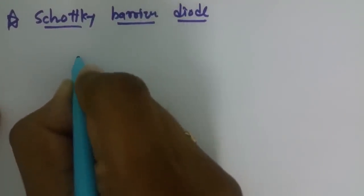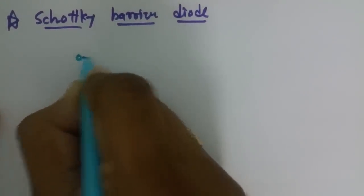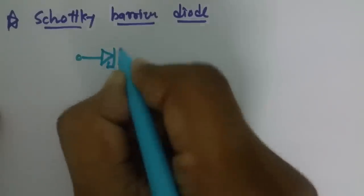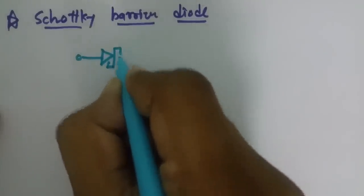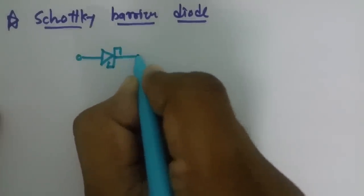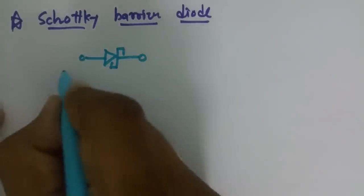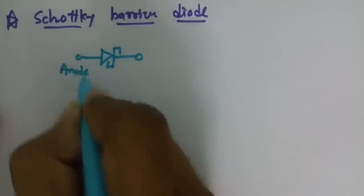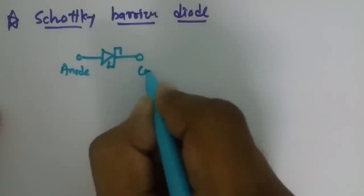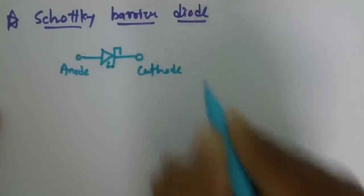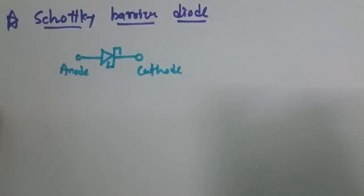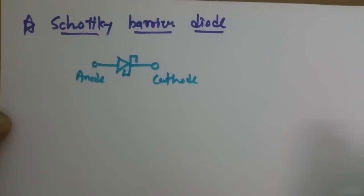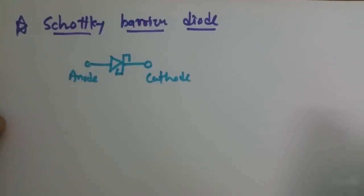Schottky Barrier Diode is a two-terminal device, and its symbol has an anode and a cathode. This is the basic symbol of the Schottky Barrier Diode.